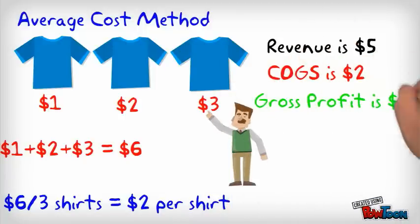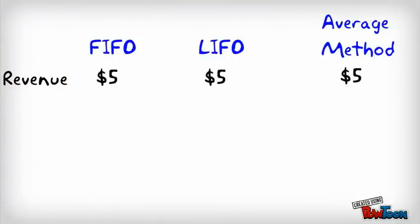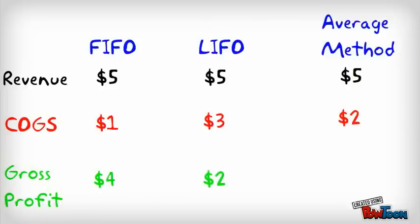Let's compare the three methods. The revenue is the same under all three since the selling price is $5 per shirt. The cost of goods sold is $1, $3, and $2 respectively, which results in a different gross profit. That means under FIFO you will pay the highest taxes, and under LIFO, the lowest.